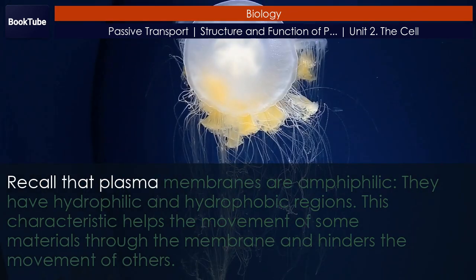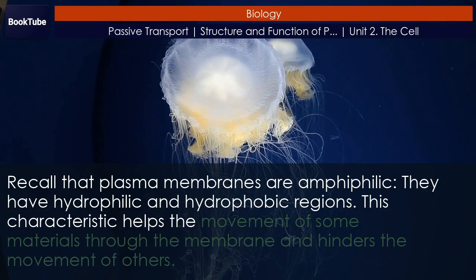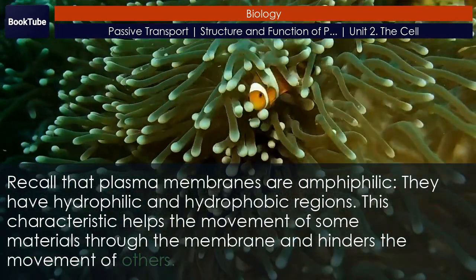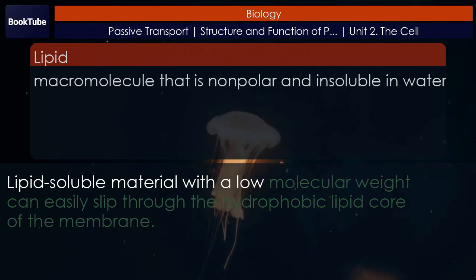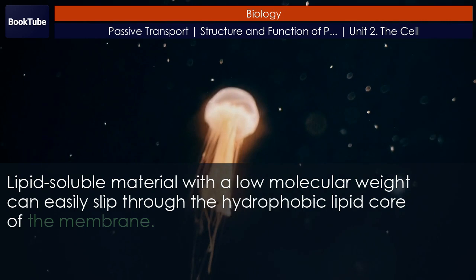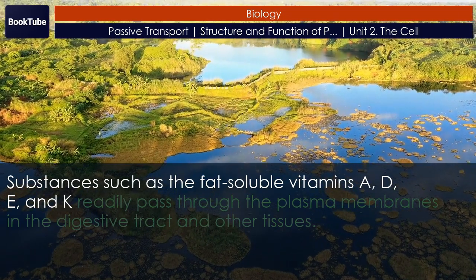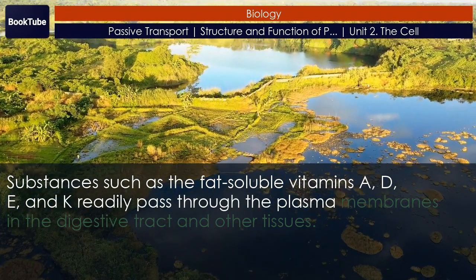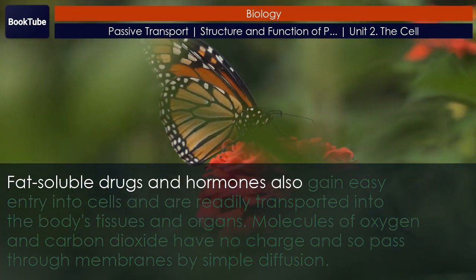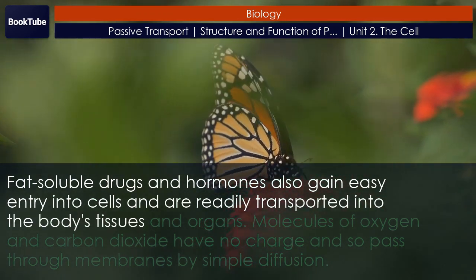Recall that plasma membranes are amphiphilic — they have hydrophilic and hydrophobic regions. This characteristic helps the movement of some materials through the membrane and hinders the movement of others. Lipid-soluble material with a low molecular weight can easily slip through the hydrophobic lipid core of the membrane. Substances such as the fat-soluble vitamins A, D, E, and K readily pass through the plasma membranes in the digestive tract and other tissues. Fat-soluble drugs and hormones also gain easy entry into cells and are readily transported into the body's tissues and organs.